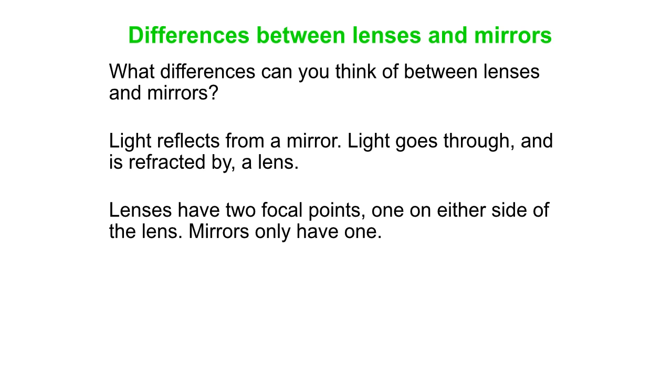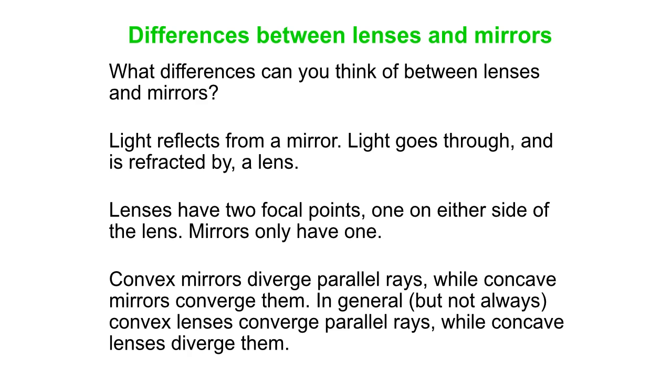Another one, lenses have two focal points, one on either side of the lens. Mirrors only have one. And another one, convex mirrors diverge parallel rays while concave mirrors converge them. In general, but not always, convex lenses converge parallel rays while concave lenses diverge them.